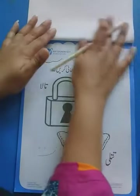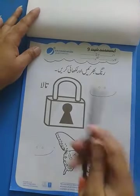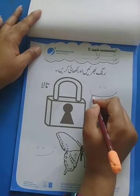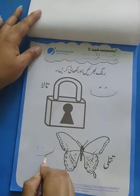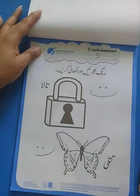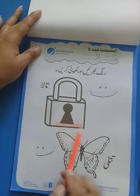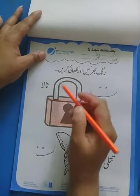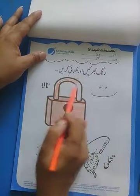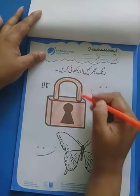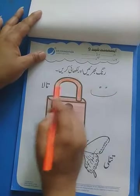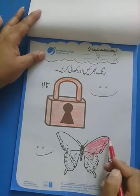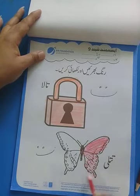Now come to next assessment sheet number 9. Again we have letter Te — Te se taala, Te se titli. Then color these pictures. Butterfly — you use the color of your own choice and then color these pictures.